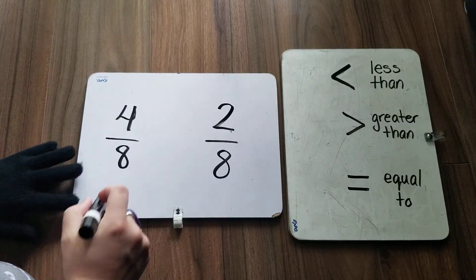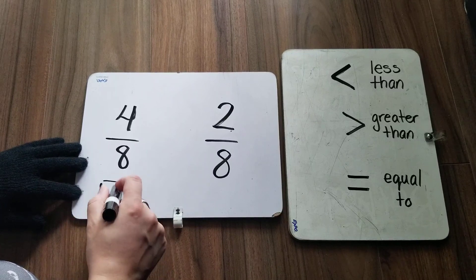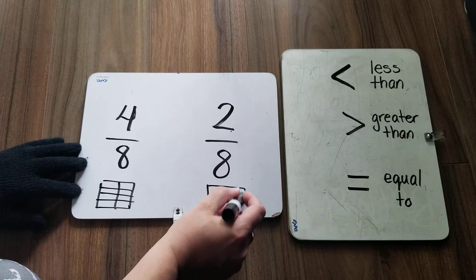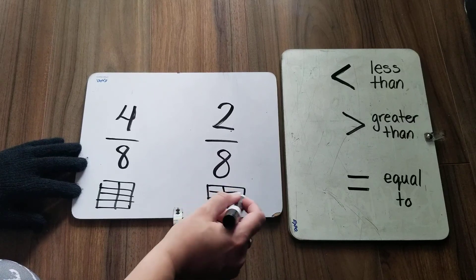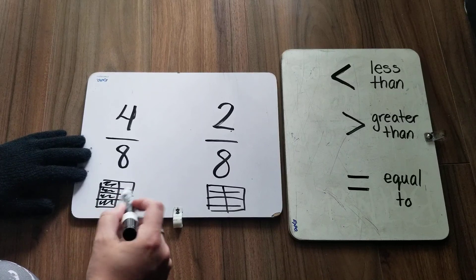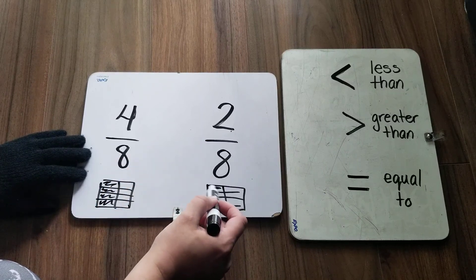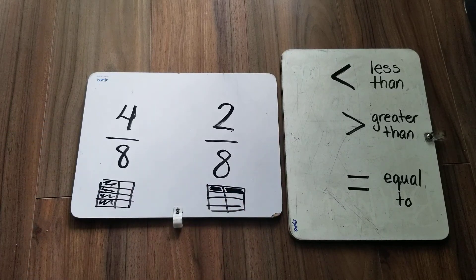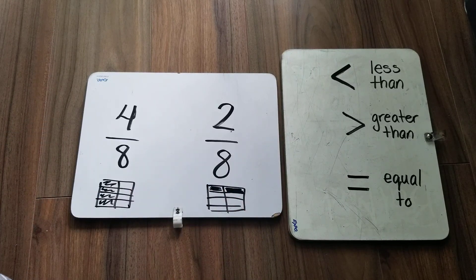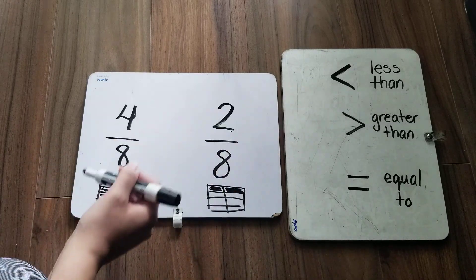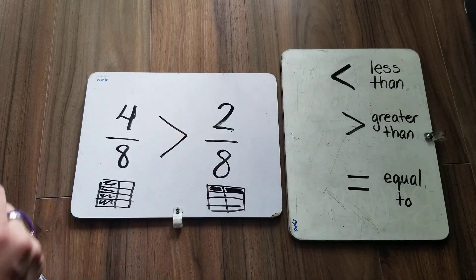Well, four out of eight means I have a box that has four on each side or eight all together. This one means I have four of them colored. So I have a half colored in here. I only have two out of those eight colored. Which one takes up more space? Well, four out of eight is greater than two out of eight.